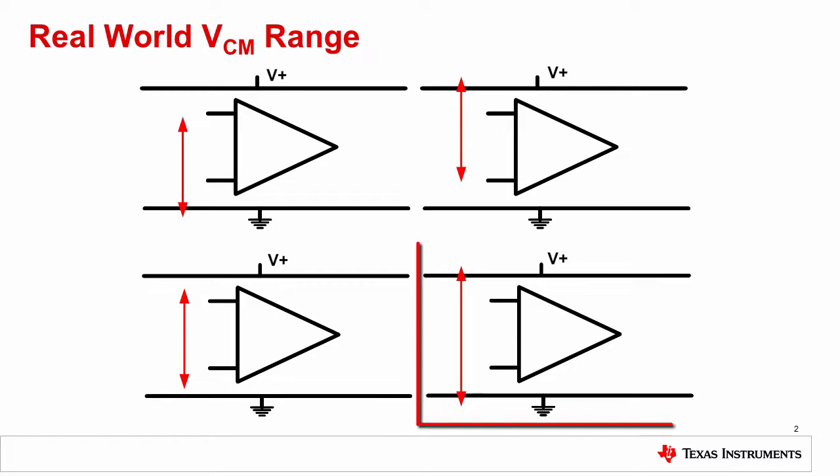The best case scenario is shown in the lower right hand corner. This amplifier has a common mode voltage range which is slightly beyond each power supply rail. This is called a rail to rail amplifier.